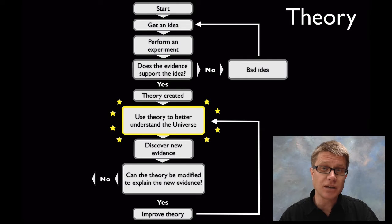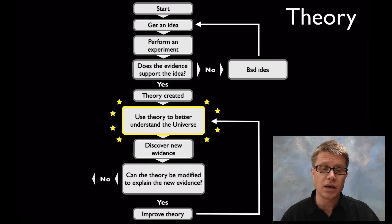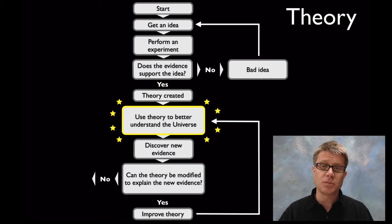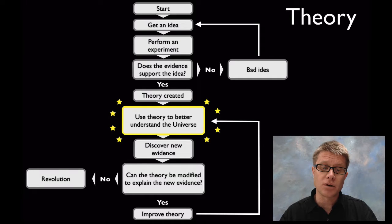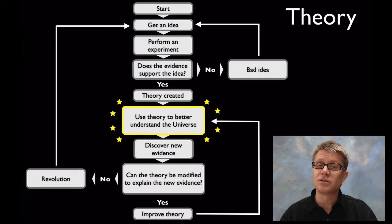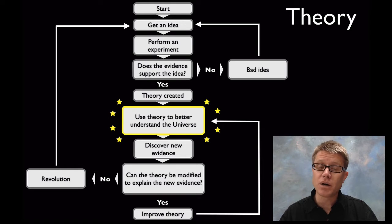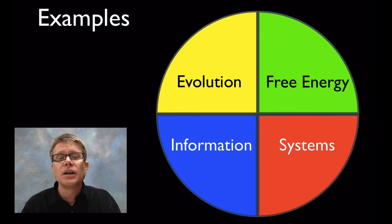If a theory doesn't match the data — for example, before natural selection we had the idea that God had simply placed all species on the planet perfectly evolved to where they are — if that theory doesn't fit with the data we're collecting, that leads to a revolution. And so over time science gets better and better, and explanations get better and better.